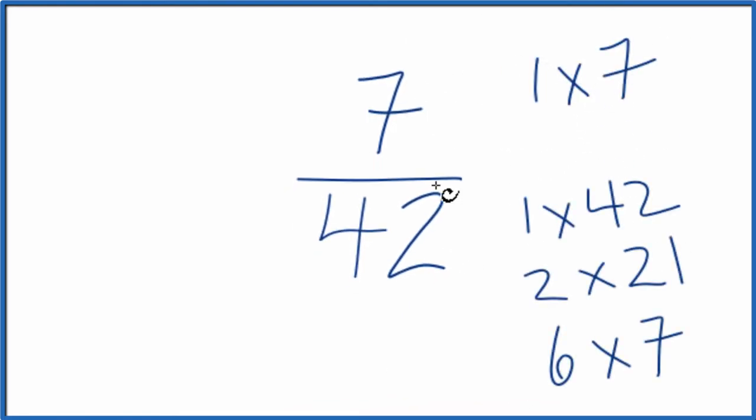I can see for 7 and 42, the greatest common factor is 7. So we'll divide the numerator by 7 and the denominator, and we'll have simplified 7 over 42.